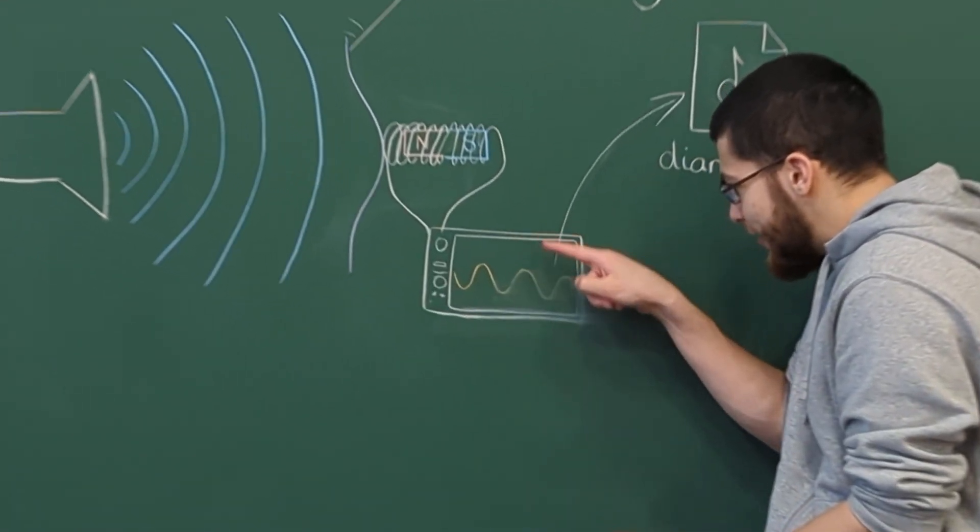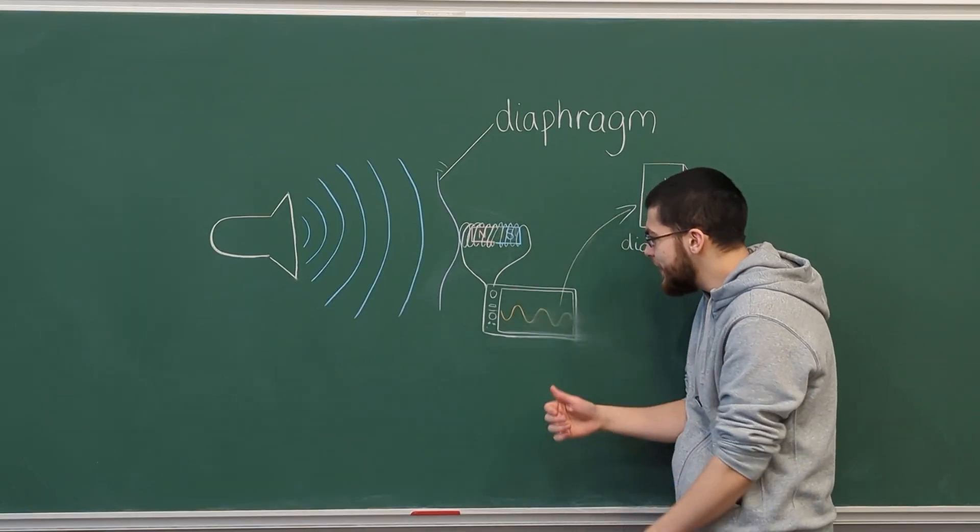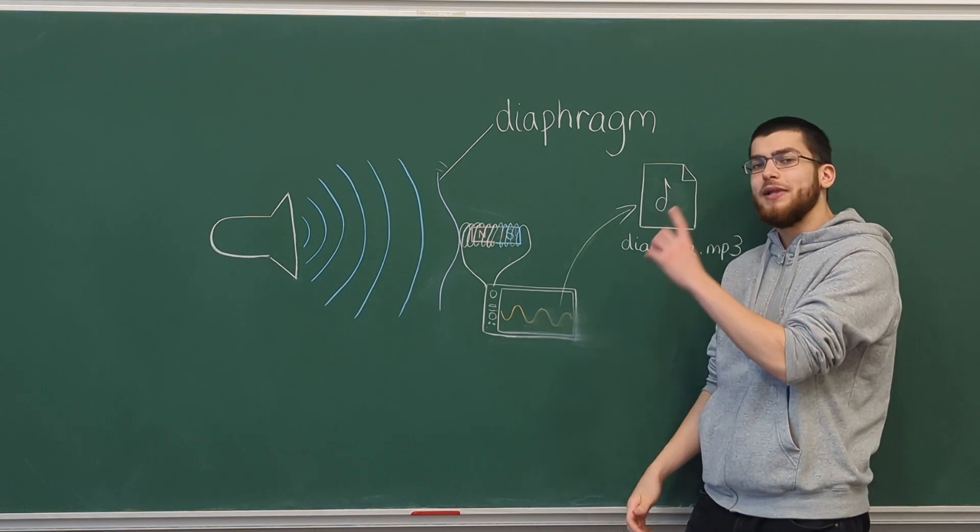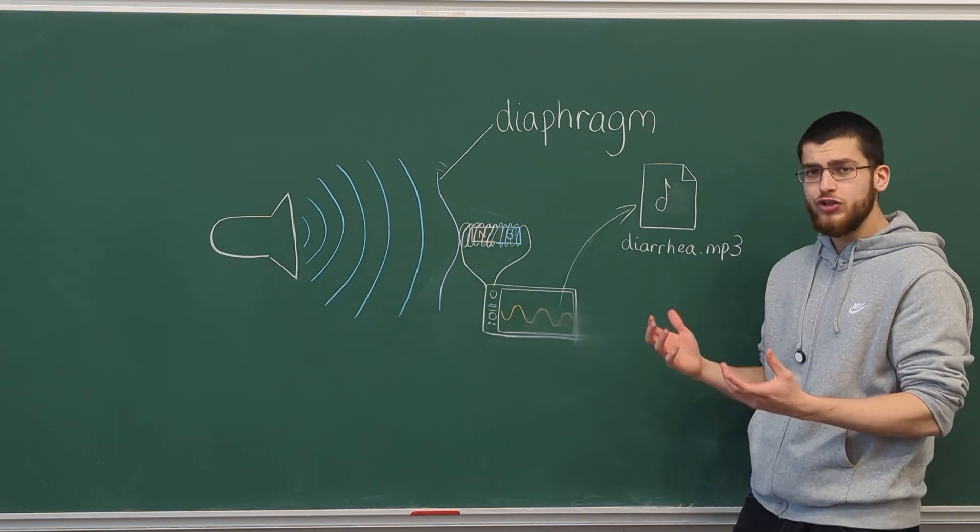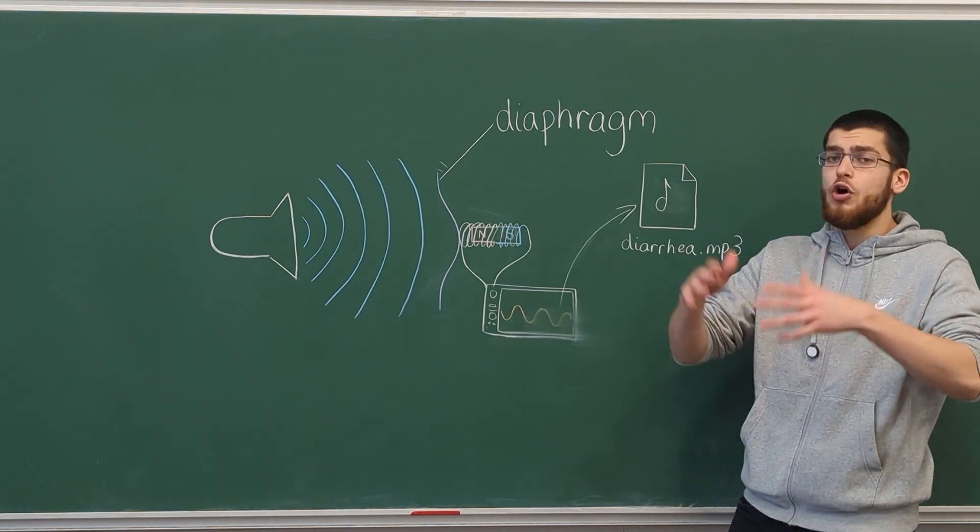This fluctuation in electrical current can be amplified and then saved in a file, which can be played back and shared, giving us the ability to speak to people across the planet. So now you know how a microphone records sound.